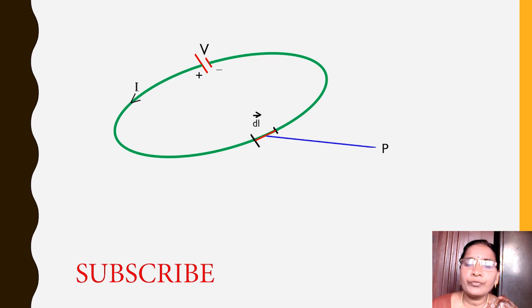And they wanted to find the magnetic field at this point P which is at a distance of R, and unit vector R̂ is the direction of R. So, the value of dB was found.